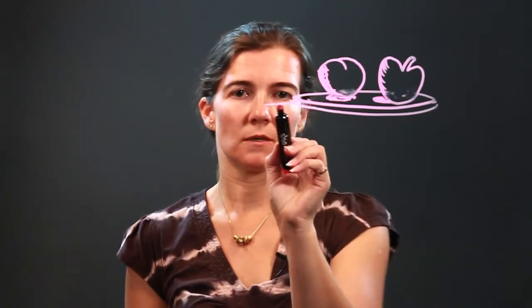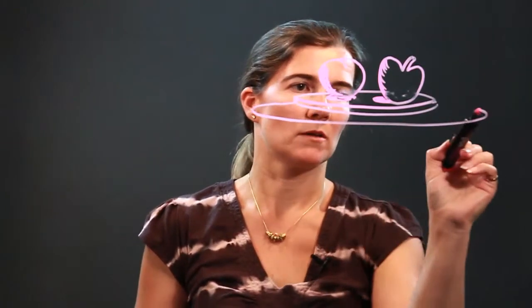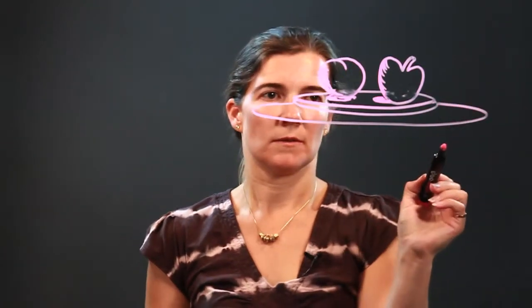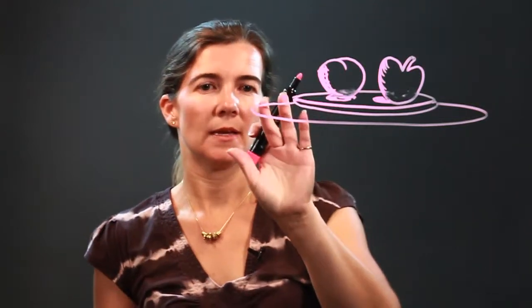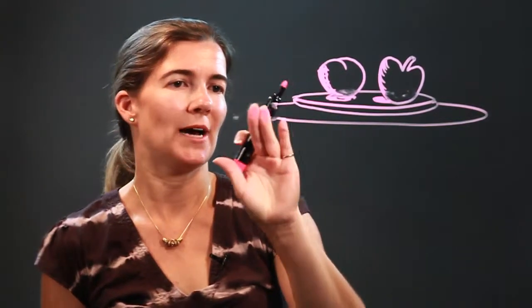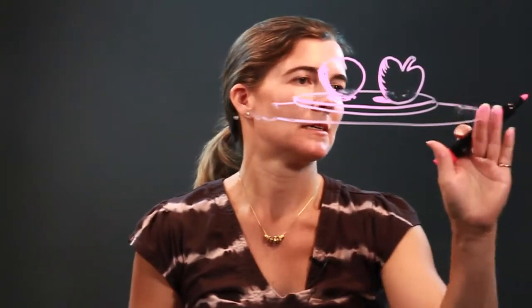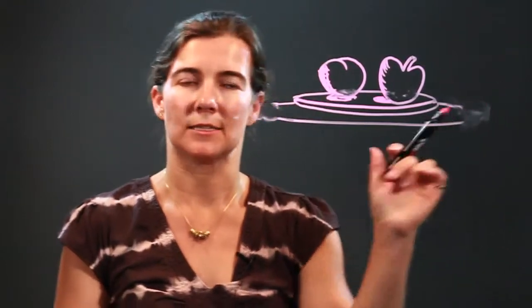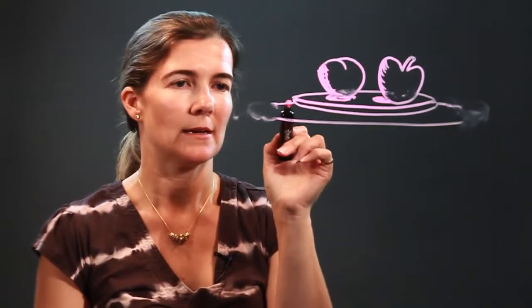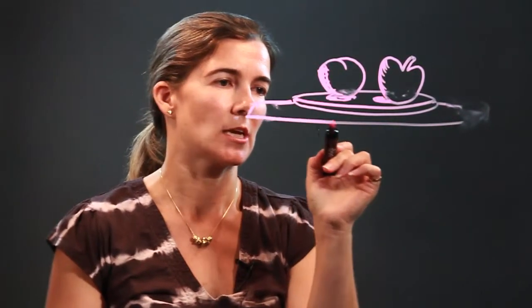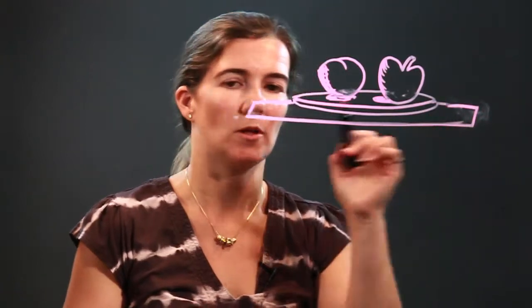And then you can put shadows under your fruit if you'd like. The plate is going to be sitting on a table. I made it a circular shaped table, but in a still life we like to make it a little more diverse, so let's change this to a square shaped table.